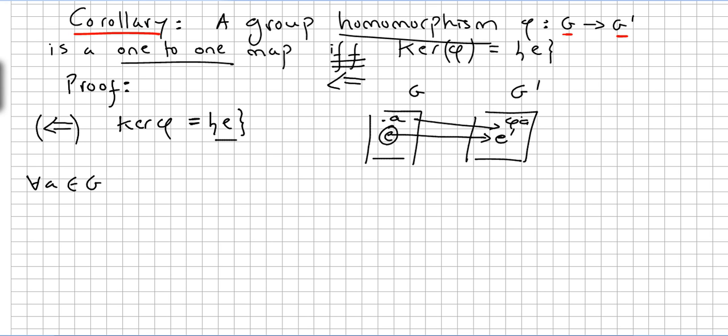The inverse image here, we have G' here, will be precisely A operation the identity. Because A operation the identity will be the element A. Do not forget we are talking about homomorphisms.